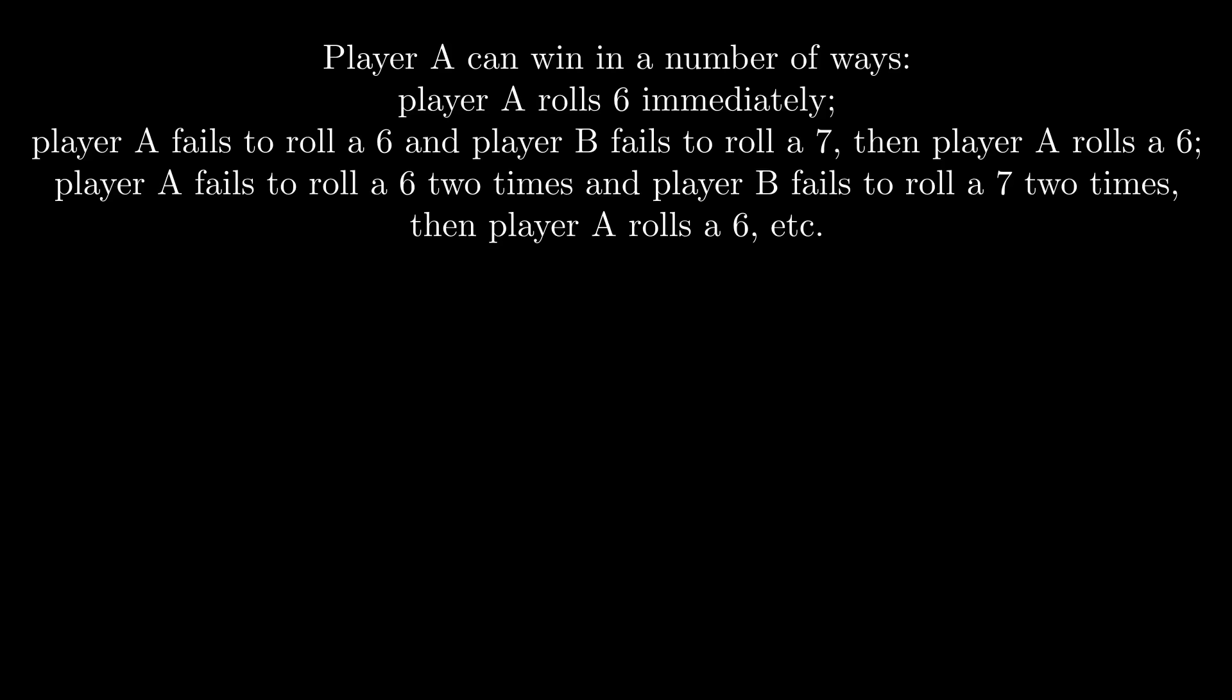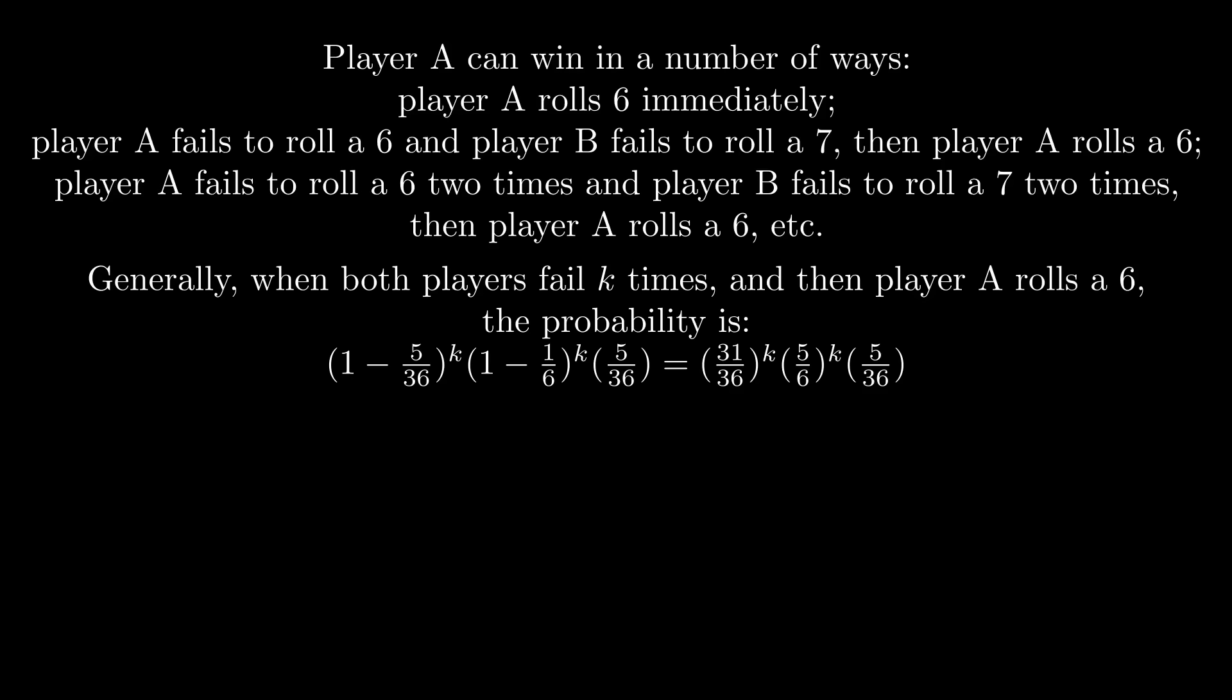Generally, when both players fail K times and then player A rolls a 6, the probability is given by the following expression.